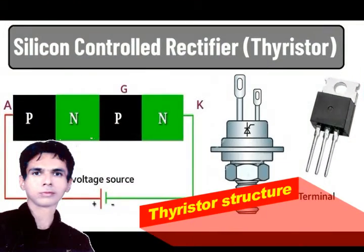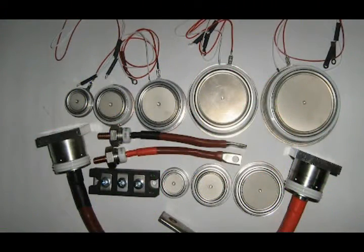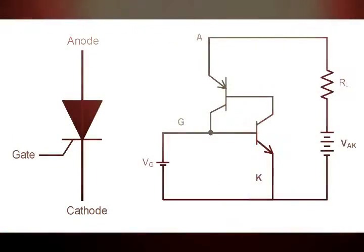The best way to describe the operation of a thyristor is to assume that a thyristor is made of two transistors connected together like a pair of regenerative switches.